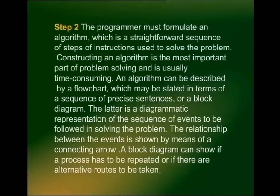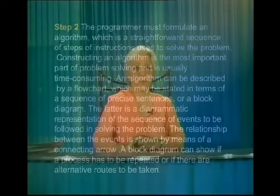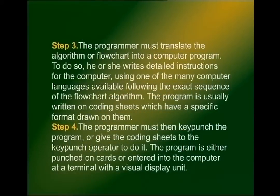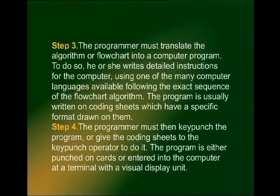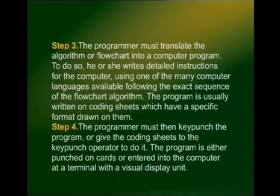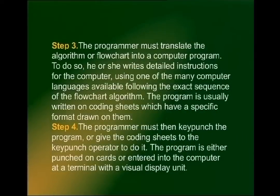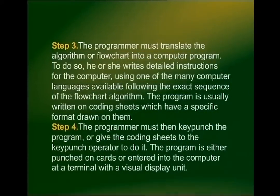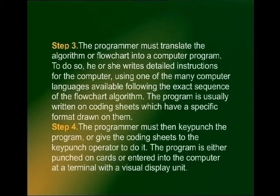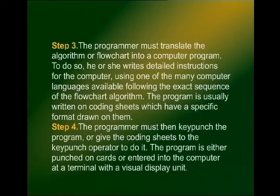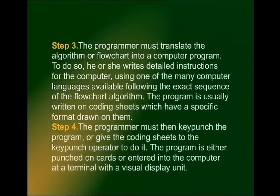A block diagram is a diagrammatic representation of the sequence of events to be followed in solving the problem. The relationship between the events is shown by means of a connecting arrow. A block diagram can show if a process has to be repeated or if there are alternative routes to be taken. Step number 3: the programmer must translate the algorithm or flow chart into a computer program, writing detailed instructions using one of the many computer languages available, following the exact sequence of the flow chart algorithm. The program is usually written on coding sheets which have a specific format.